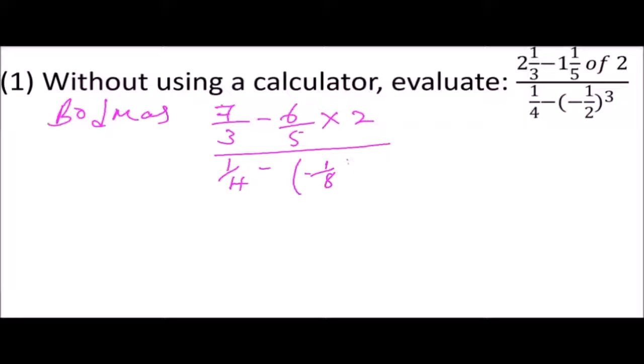When you multiply here, you get 7/3 minus 12/5, divided by—now ¼, when you open the bracket, it will be negative and negative is positive—so we have ¼ plus 1/8.